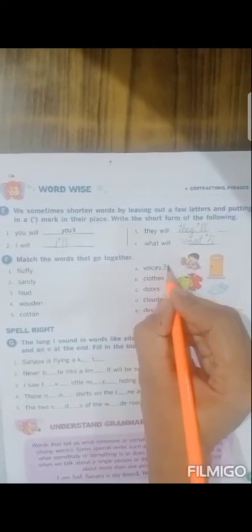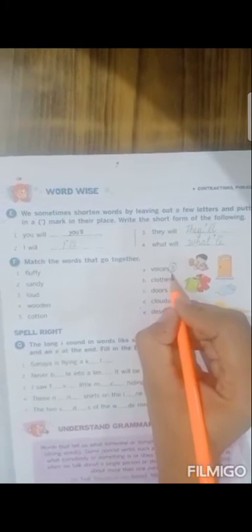Loud. What can be loud? The voice can be loud. Voice is written on top. Write 3 at the end of the word. Now, wooden. What is made up of wooden in your house? Door. At the end of the word door, you will write 4 and put a circle.